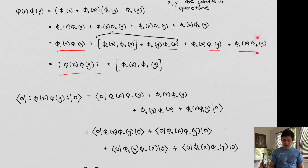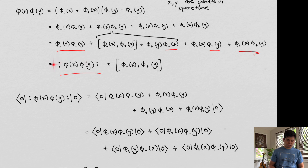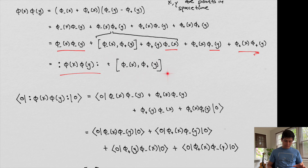This remaining term doesn't have an annihilation component at all, so it can be placed anywhere — it doesn't really matter where it's placed. We'll include it within the definition of the normal ordering even though its position doesn't affect the result.